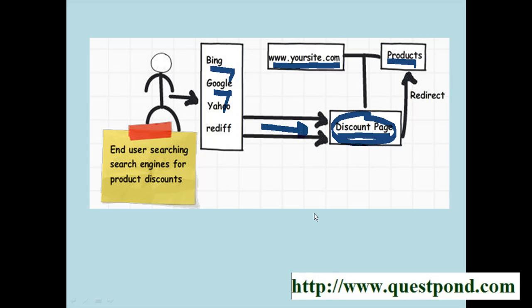The first option — copying the products page data onto the discount page — can be a problem, because search engines can penalize for duplicate content. It's very possible that the discount page, which is now listed on various search engines like Bing, Google, Yahoo, Rediff, etc., could get delisted. That would completely make your SEO marketing effort zero.